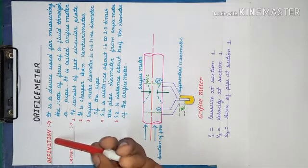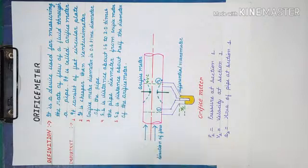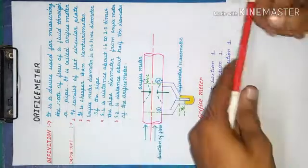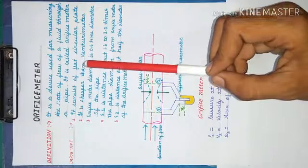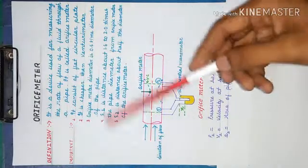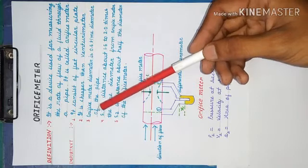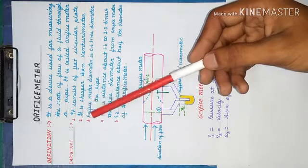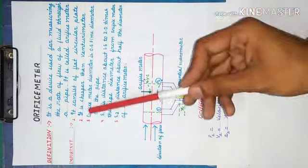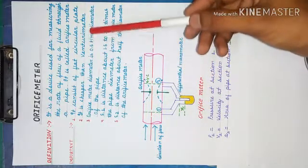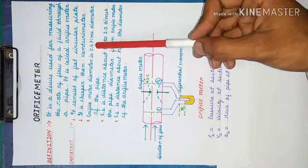This is the definition of orifice meter. It is a device used for measuring the rate of flow of fluid flowing throughout a pipe. It is known as the orifice meter. There are five important points of the orifice meter: it consists of a flat circular plate and it is cheaper than the venturimeter.